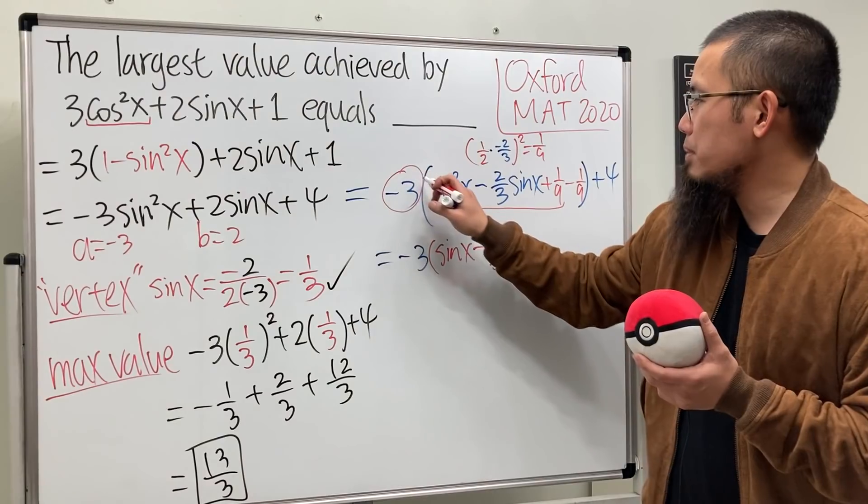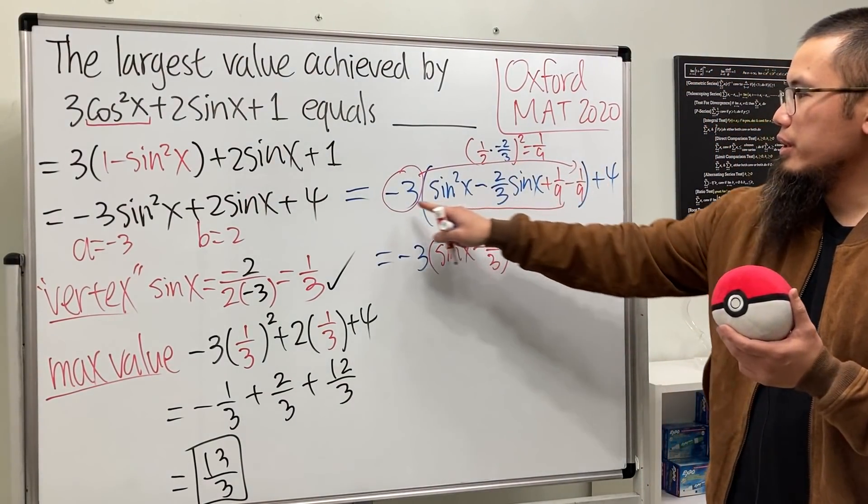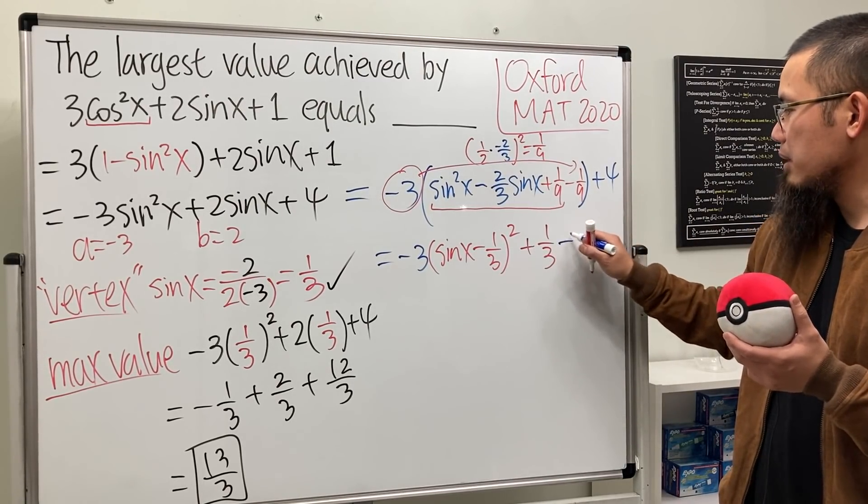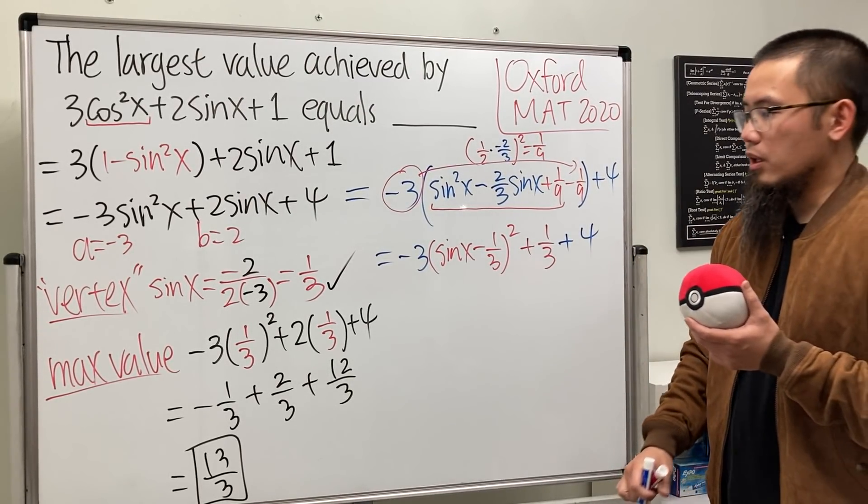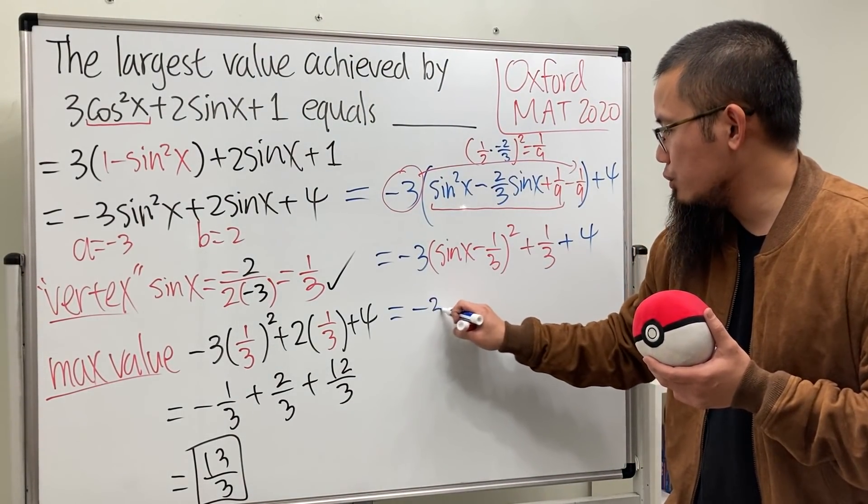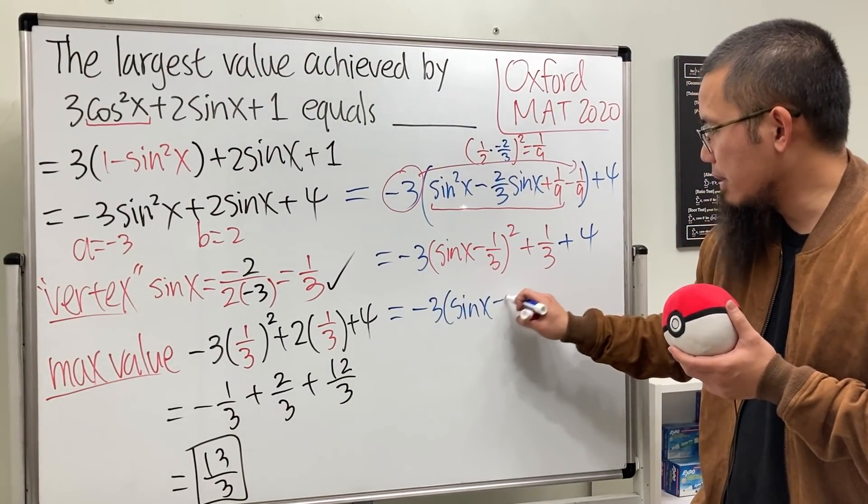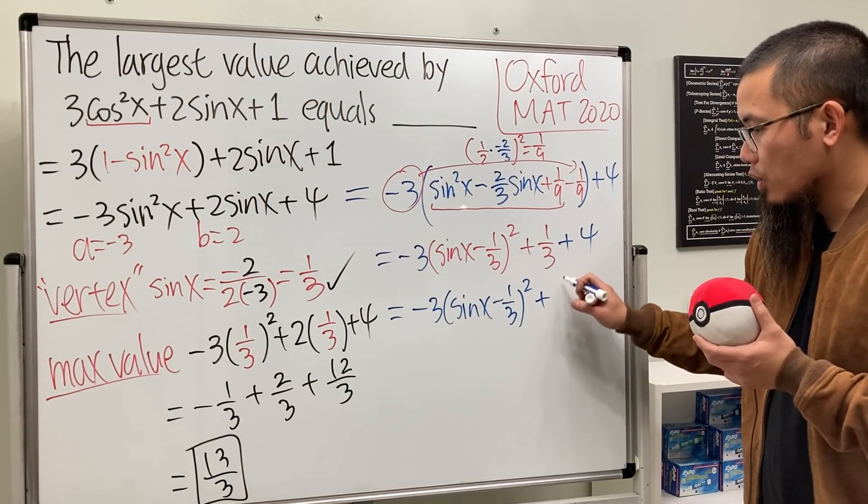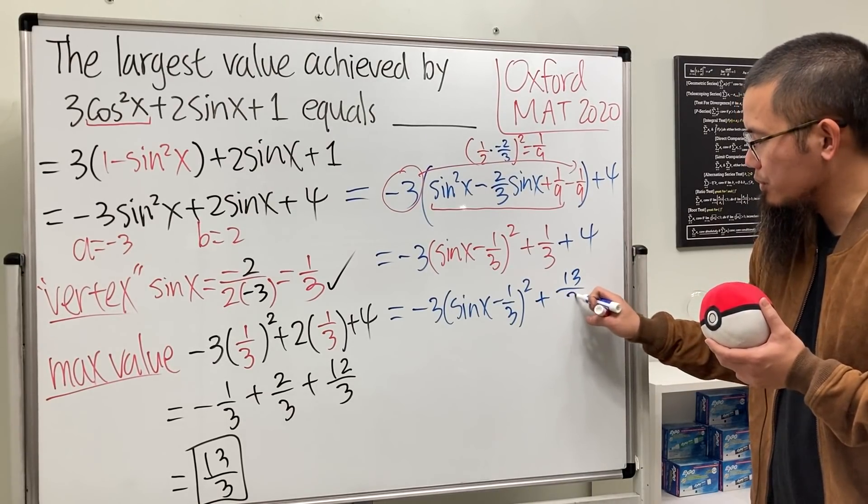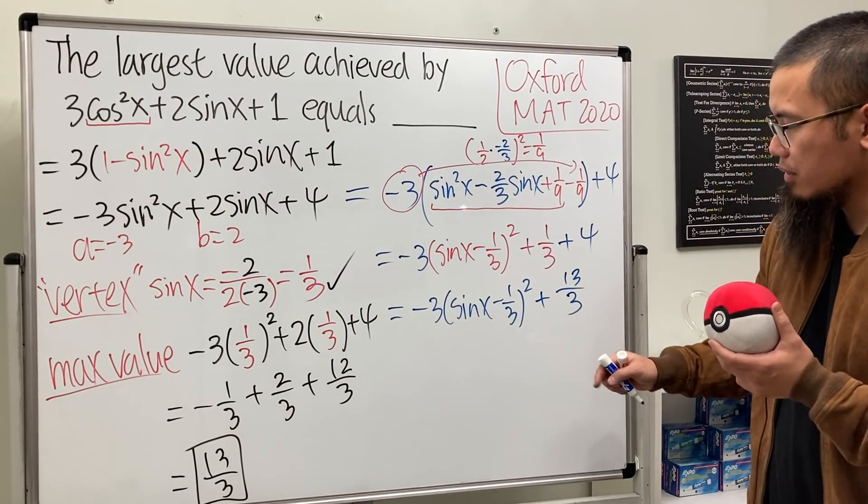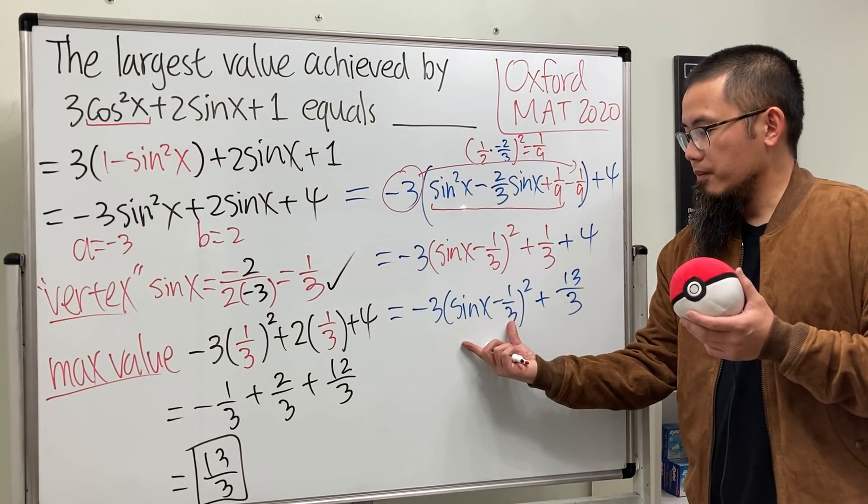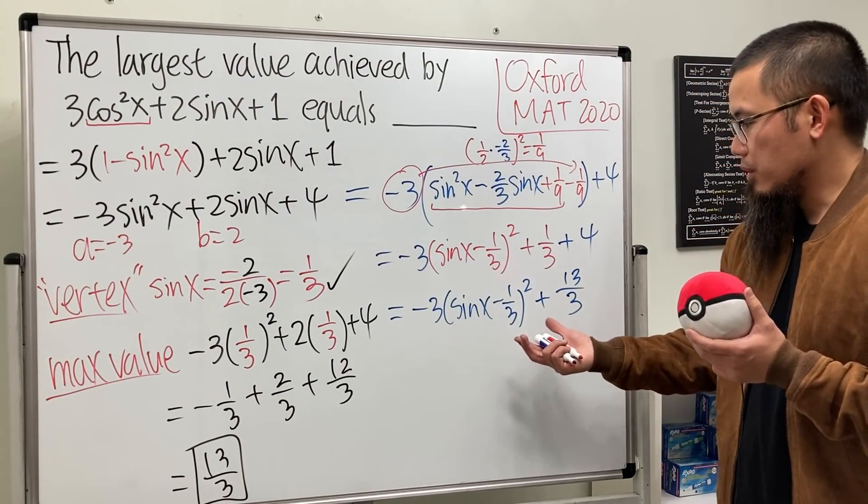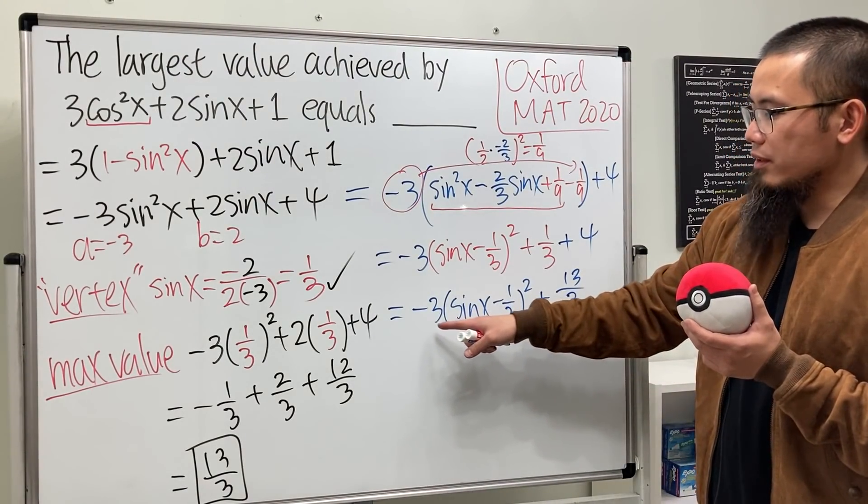You can multiply that out, you'll get that. Cool. And we will have to multiply this and that, so negative three times negative one over nine is going to be plus one over three, and then we have the plus four on outside. So as you can see we can write this as negative three times sine x minus one over three squared, and this and that, it's that answer plus one. I mean one is 13 over three. And now have a look, this right here is achievable. Sine x can be equal to one third, so we talked about earlier.